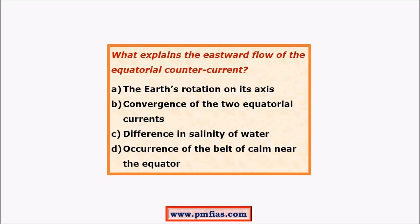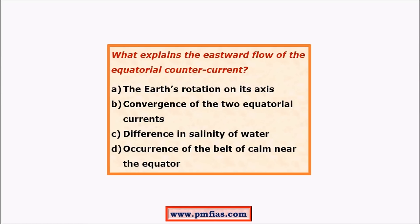Earth's rotation brings water from east to west, but the Counter Equatorial Current moves from west to east, so earth's rotation is not the primary cause here. Differences in salinity create only vertical movements, not horizontal. Convergence of equatorial currents is a factor, but the most important factor is the doldrums — the presence of the calm region between north and south equatorial currents. The answer is D: occurrence of a belt of calm winds near the equator.